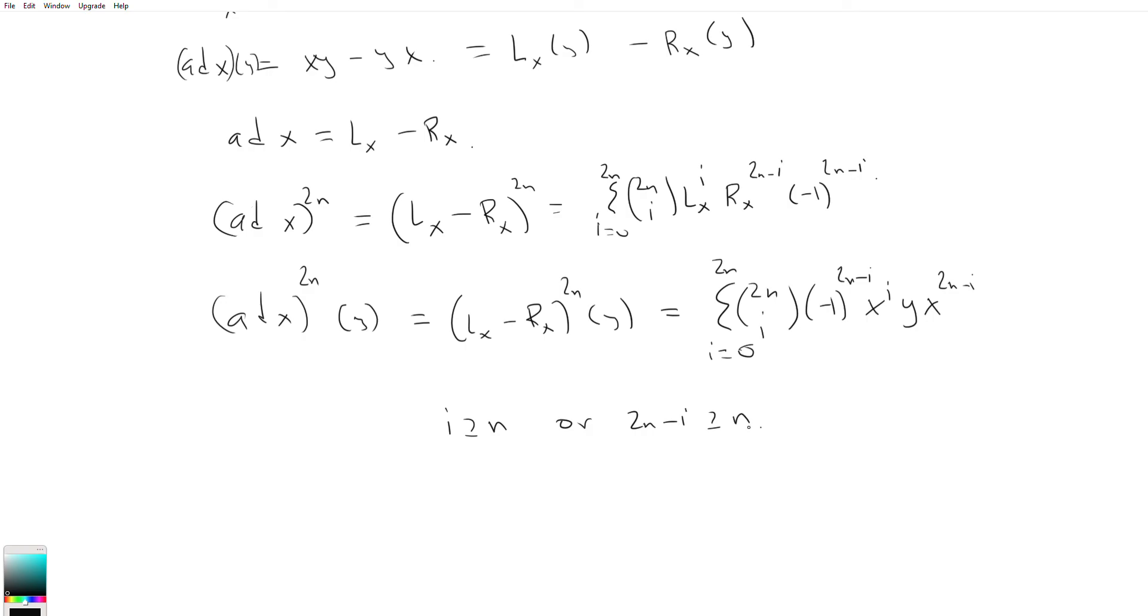So this is fantastic because we know x to the n is 0. So either x to the i is 0 or x to the 2n minus i is equal to 0. So this is actually always going to be 0. So if ad x to the 2n times an arbitrary y is always going to give you 0, we conclude that ad x to the 2n equals 0. Great.